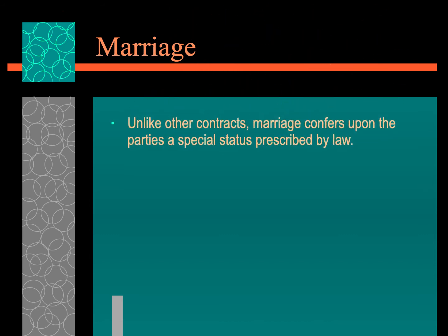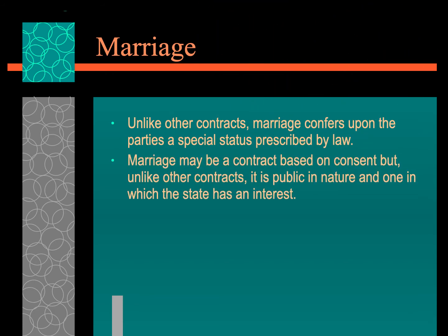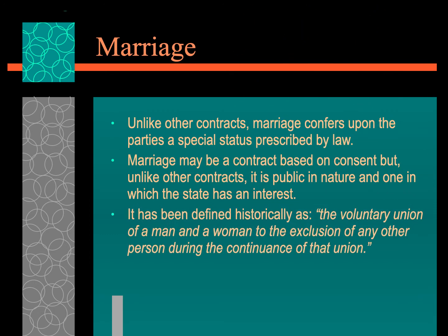Marriage is like other contracts — it confers upon the parties a special status prescribed by law. Marriage may be contract-based upon consent, but unlike other contracts, it is public in nature. Historically, marriage was defined as a voluntary union of a man and woman to the exclusion of any other person. Obviously, same-sex marriages are now legal in Canada, so it can be man-man, woman-woman, or man and woman. The main point is that marriage constitutes publicly the exclusiveness of the couple.